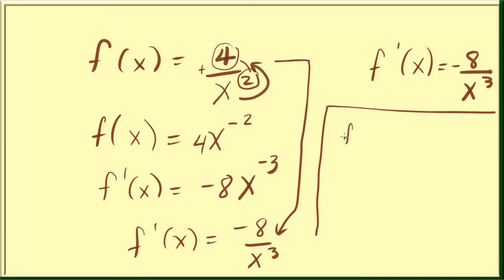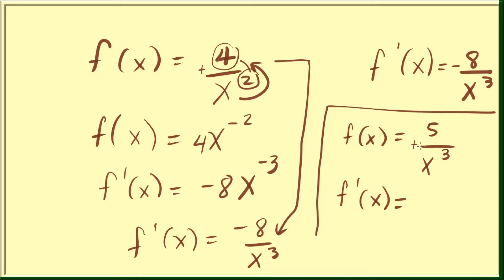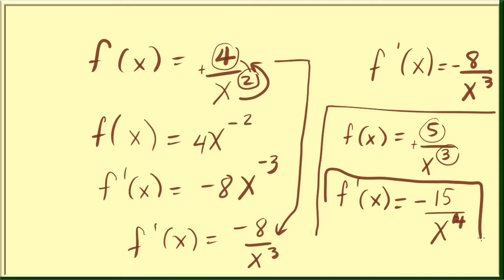Let's say you have 5 over x cubed. Using the shortcut: switch the sign from positive to negative, multiply 5 and 3 to get 15, and increment the exponent — so the denominator becomes x to the 4th. Negative 15 over x to the 4th. Very easy.